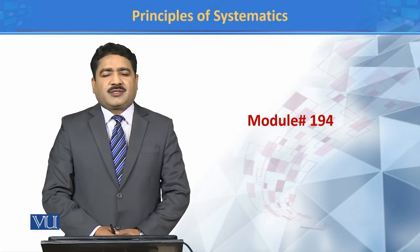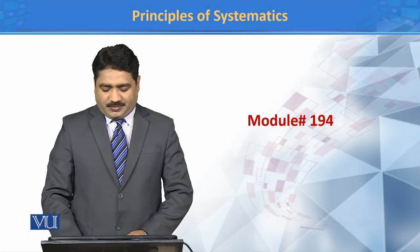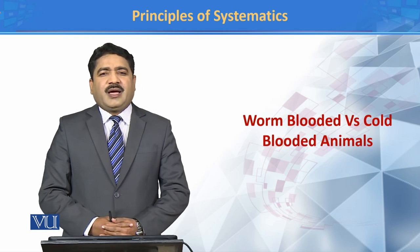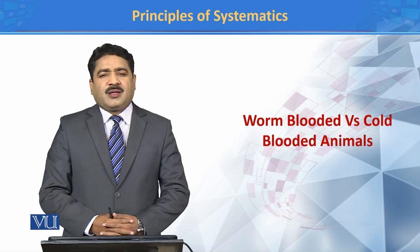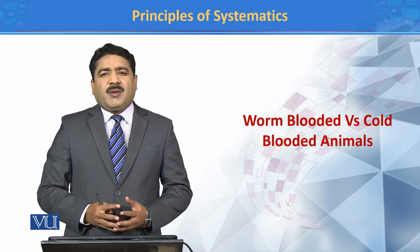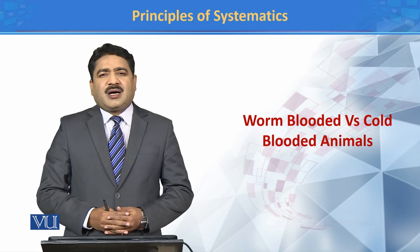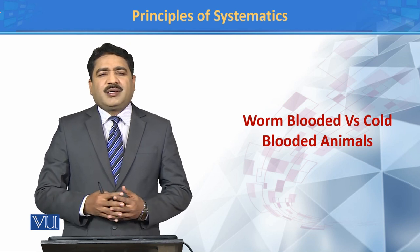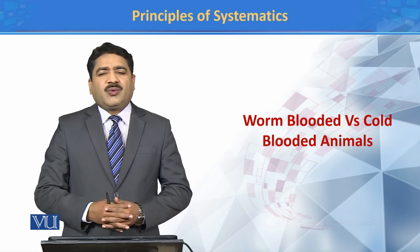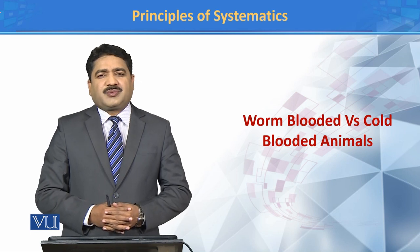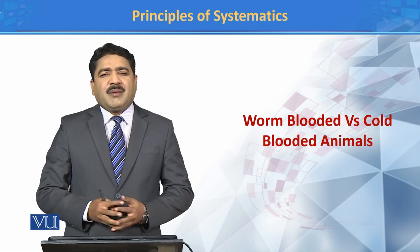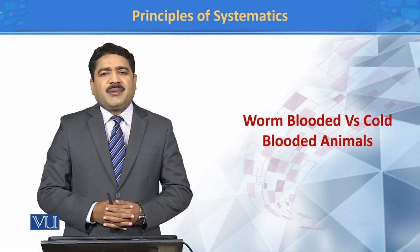Principles of Systematics, Module 194: Warm-Blooded and Cold-Blooded Animals. Warm-blooded animals are those animals which have the ability to regulate their body temperature. For example, mammals and birds.